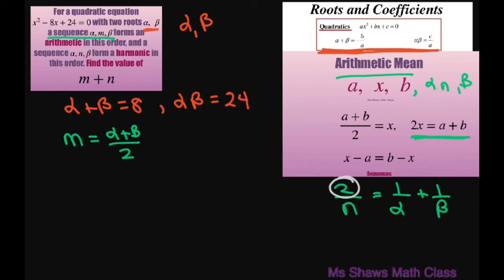Now if you simplify this, you get 2 divided by n equals alpha plus beta over alpha beta. Then solving for n, you get n equals 2 alpha beta divided by alpha plus beta. I just cross multiplied and solved for n.